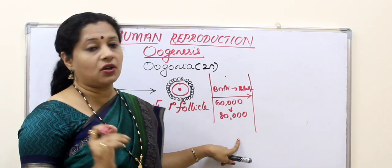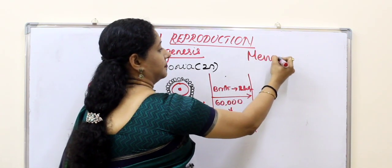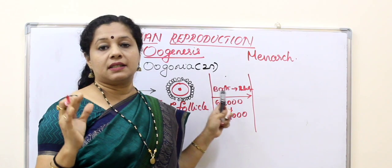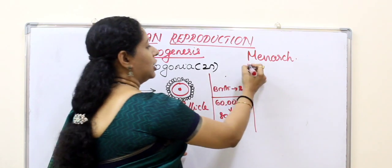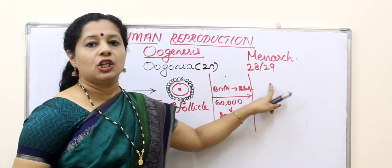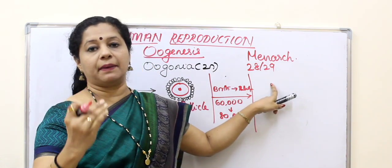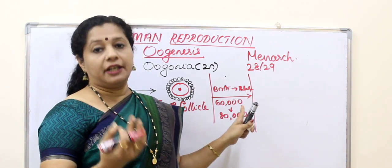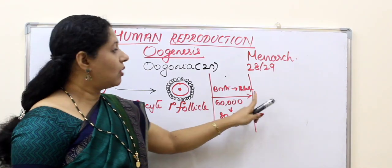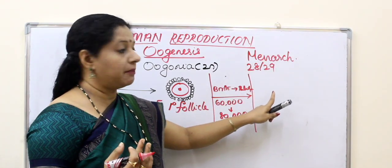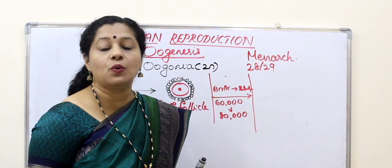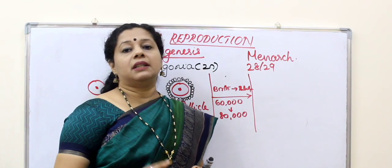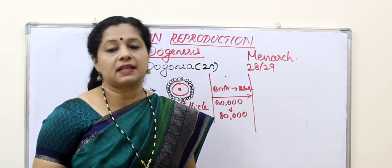At the puberty stage she starts menstruating, and the first menstruation is called menarche. Once she attains menarche, every month the cycle repeats. The menstrual cycle is around 28 to 29 days, and every month a cyclical change happens within her ovary and uterus. Every month, six or eight primary follicles will start developing, but only one will reach the final maturity stage — the others will die off.